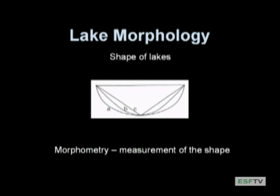As we've been talking about previously when we discussed how lakes are formed and the origin of lakes, the size and shape of a lake really can affect nearly all of the physical, chemical, and biological parameters in the lake. So it's really important that we understand what the shape of a lake is and how we can quantify it and compare the shape to the shape of other lakes.